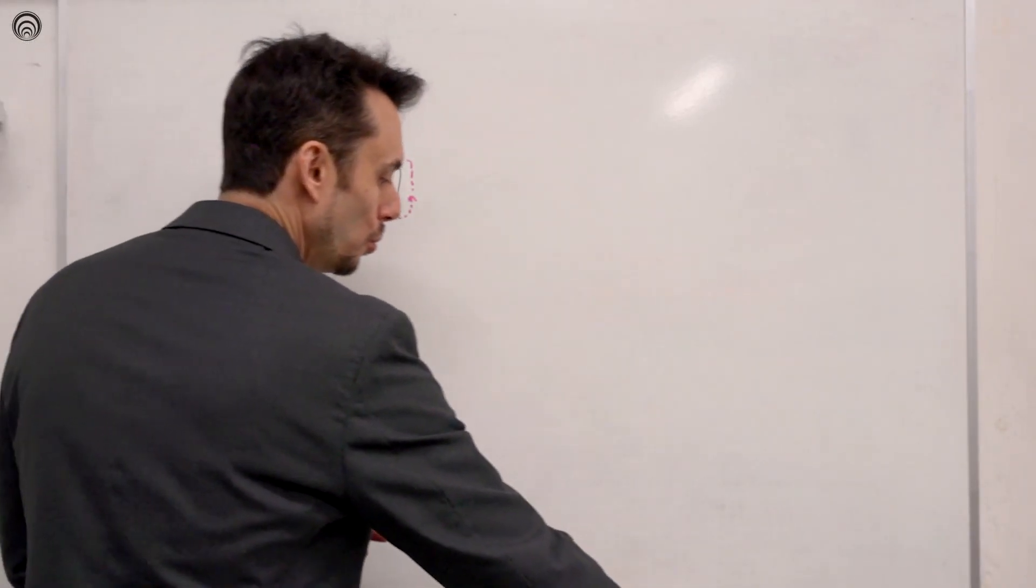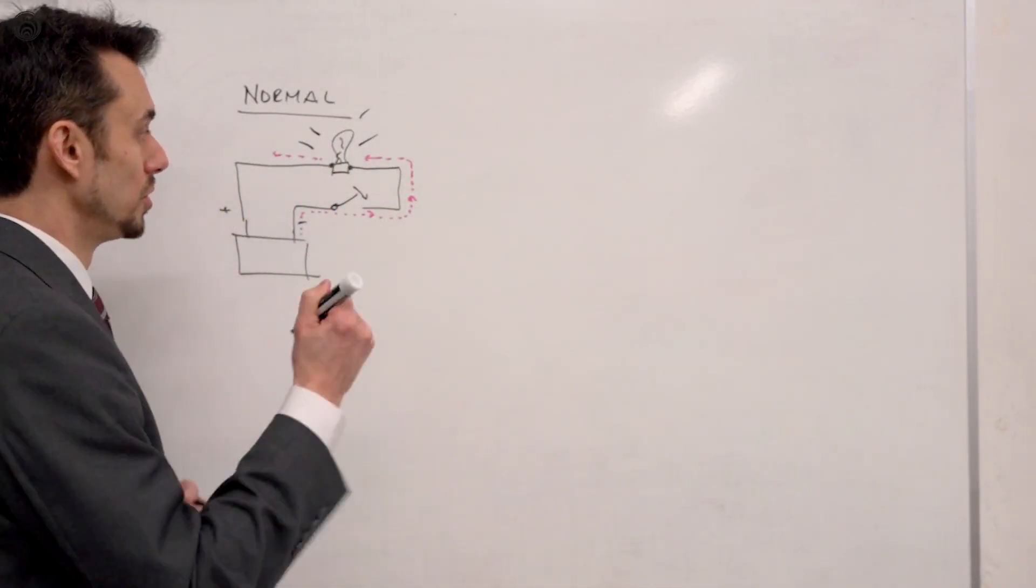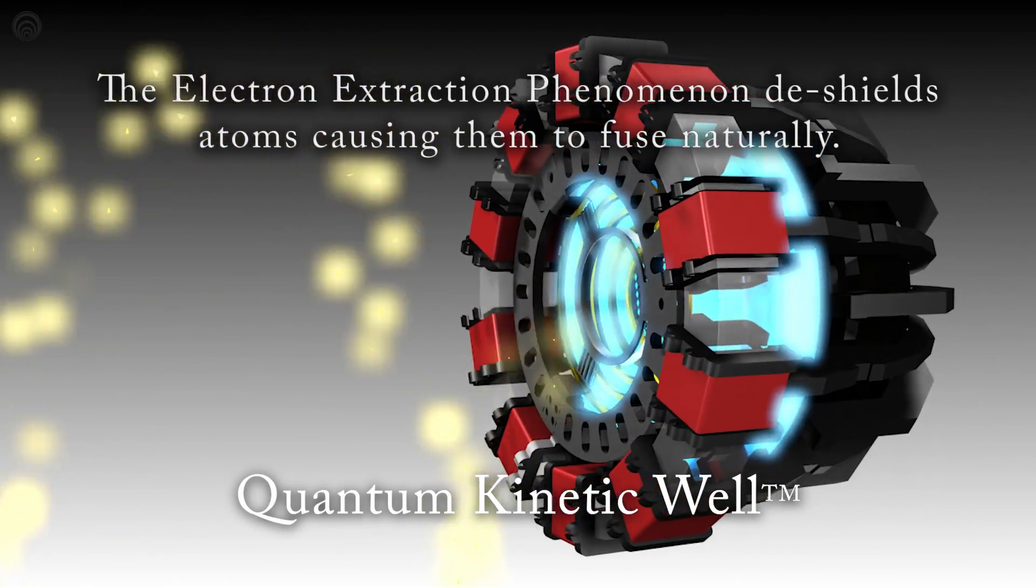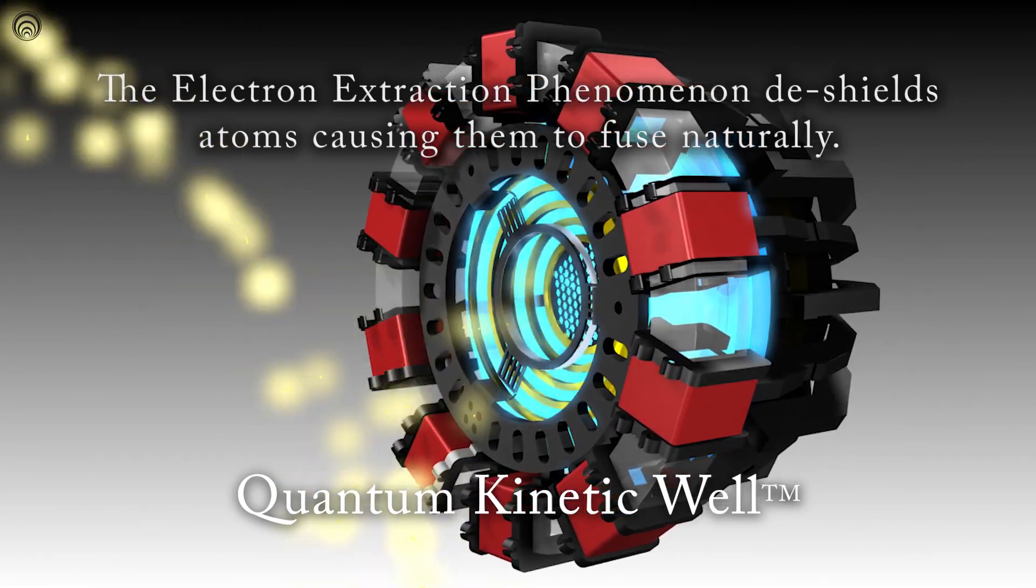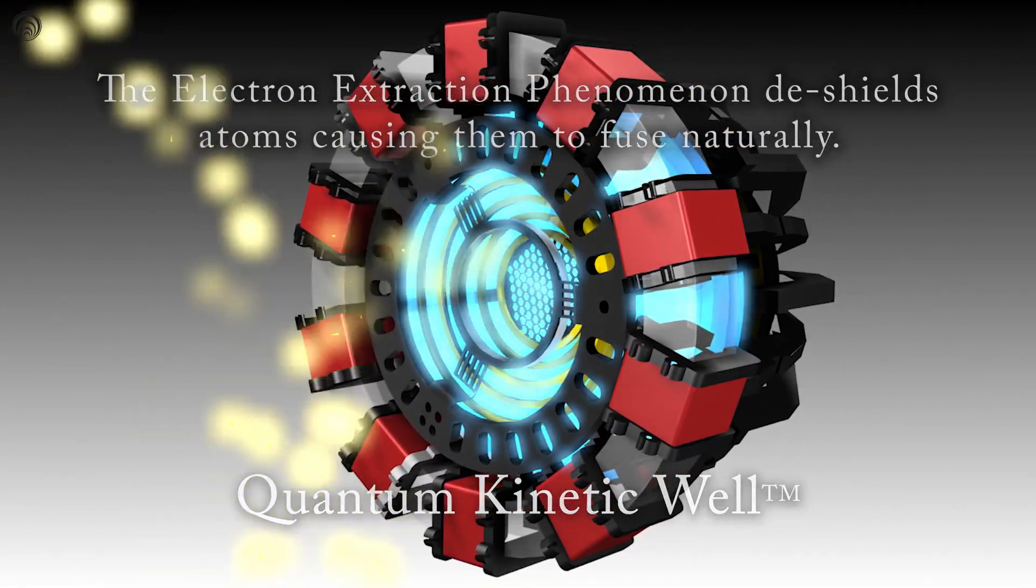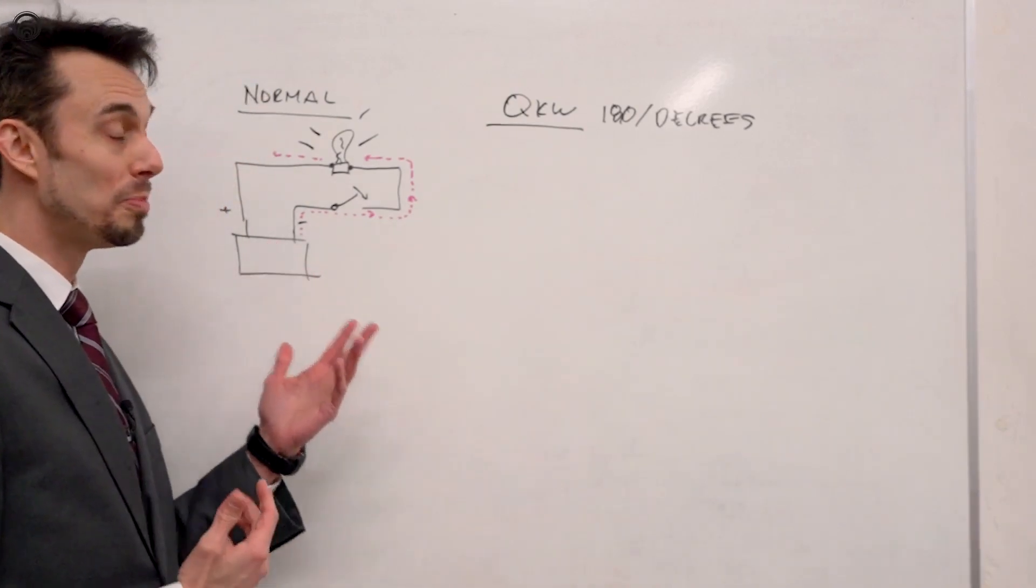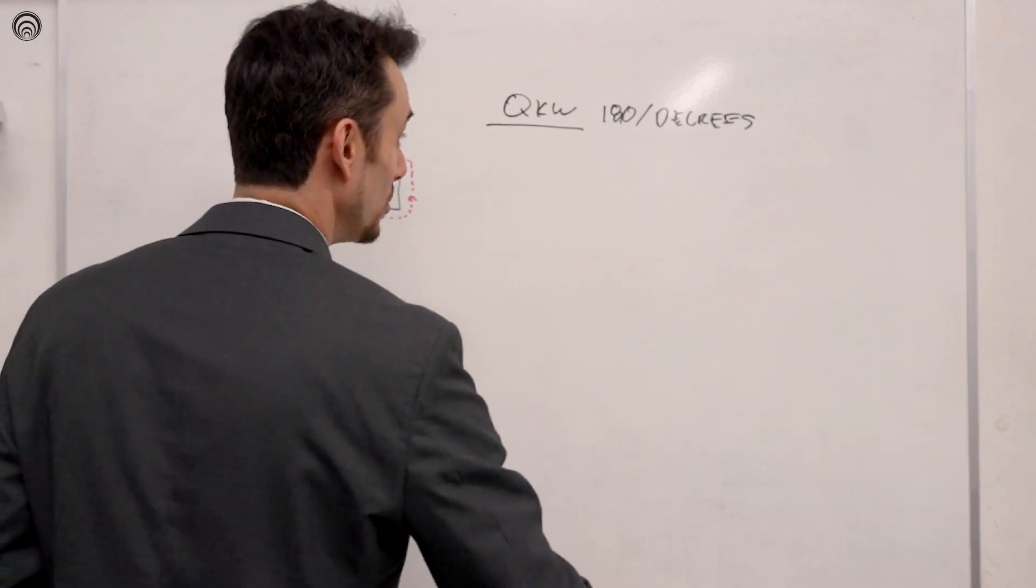So what we do, which is different, the quantum kinetic well is 180 degrees different from this. How do you generate electricity with an open circuit? Now here's the thing, this is what we do.